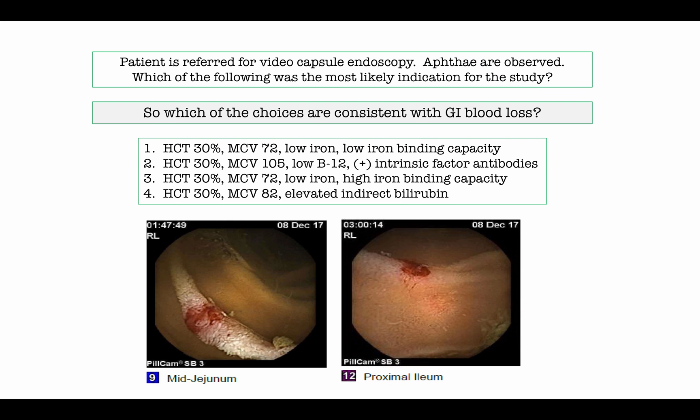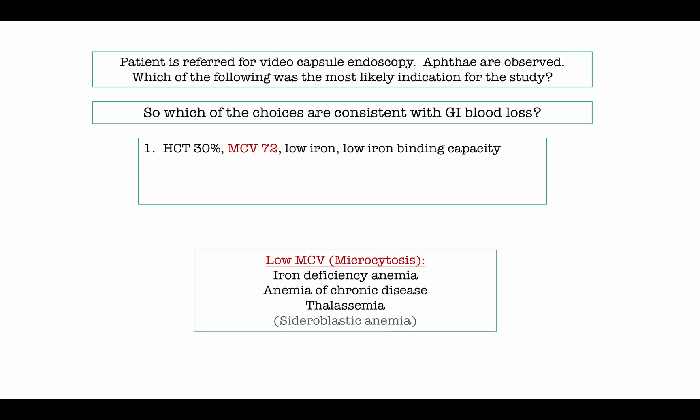Now the derivative questions: which of the following are consistent with GI blood loss? The first choice reveals a low MCV or microcytosis. When you see a low MCV, your short list includes iron deficiency anemia, anemia of chronic disease, and perhaps thalassemia — but not in a case with GI bleeding. I list sideroblastic anemia for completeness.